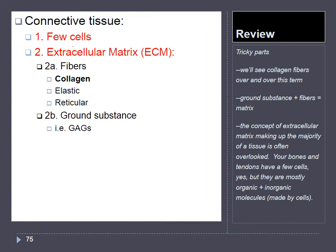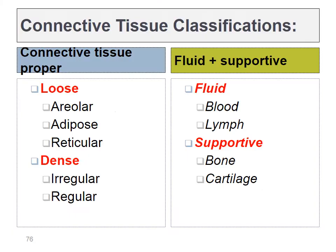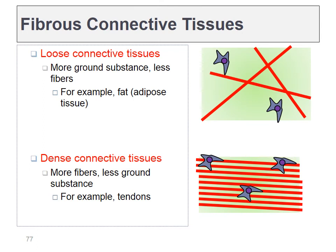That's what we find in connective tissue — a few cells, mostly extracellular matrix including fibers and ground substance. When we define connective tissues as loose or dense, we're talking about the number of fibers versus the amount of ground substance. Looser connective tissues have more gooey ground substance, whereas dense regular and dense irregular connective tissues are mostly collagen fibers. Hence, they look denser under the microscope and are much stronger.